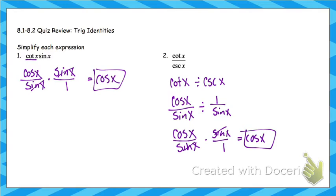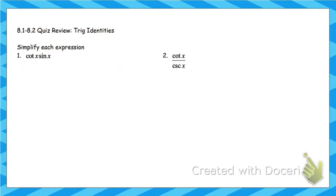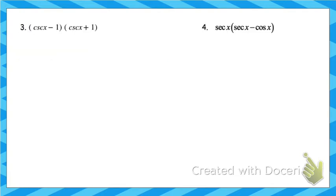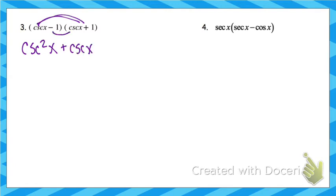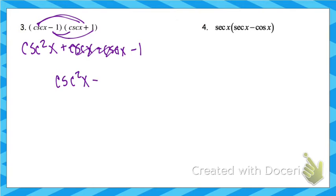Alright, let's try our next one. On this one, I'm going to FOIL this out. Cosecant times cosecant is cosecant squared. Cosecant times 1 is just cosecant. Minus cosecant, minus 1. Well, plus cosecant and minus cosecant are going to cancel out. That leaves you with cosecant squared minus 1.